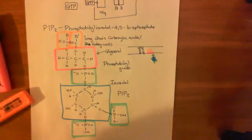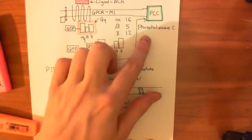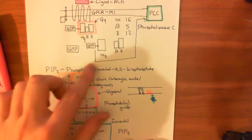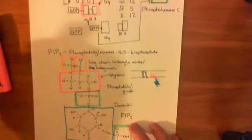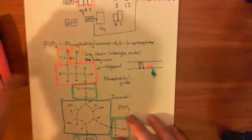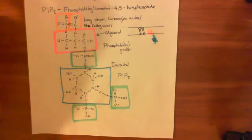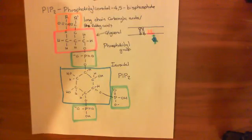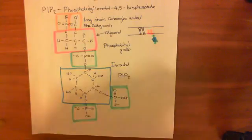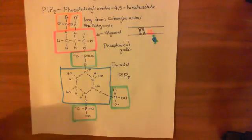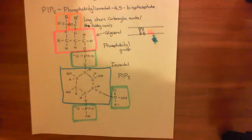Phospholipase C — the enzyme activated by our alpha-Q-GTP molecule — is going to break down these PIP2 molecules in the cell membrane. We'll continue this discussion in the next video.